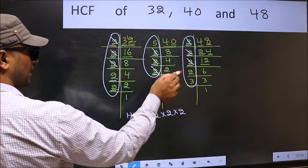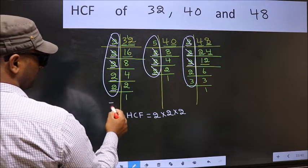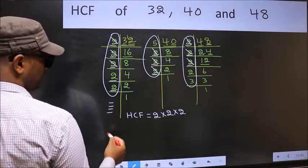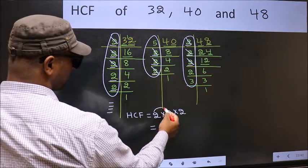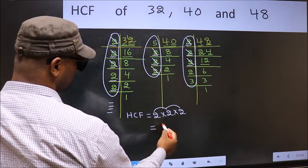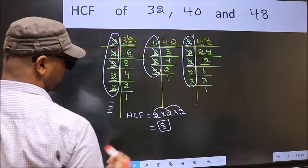No more numbers have been left out. Therefore, HCF is 2 into 2, 4 into 2, 8. 8 is our HCF.